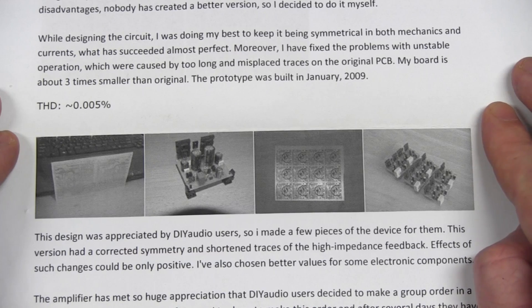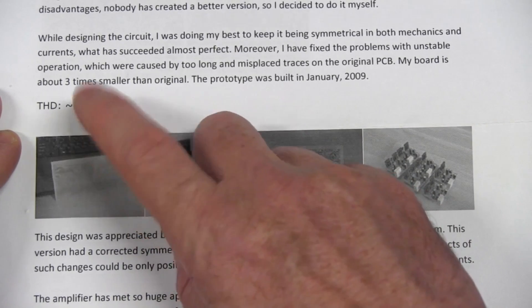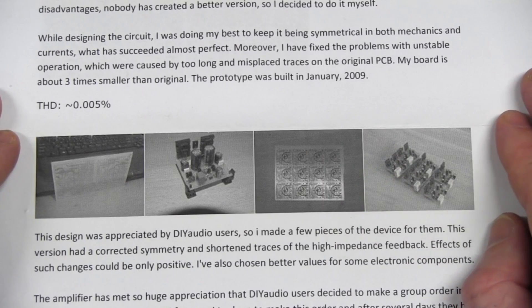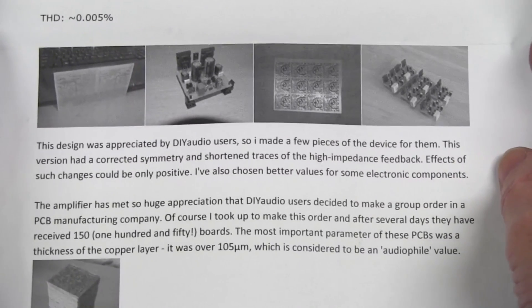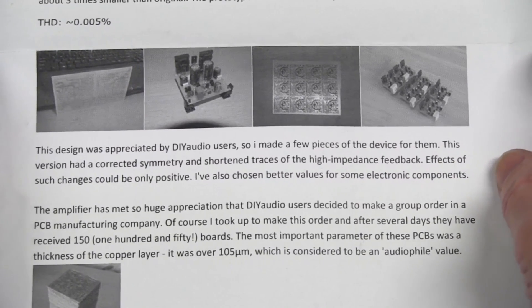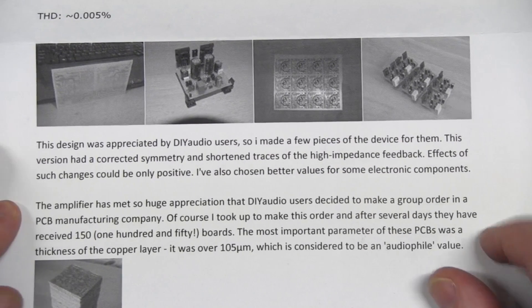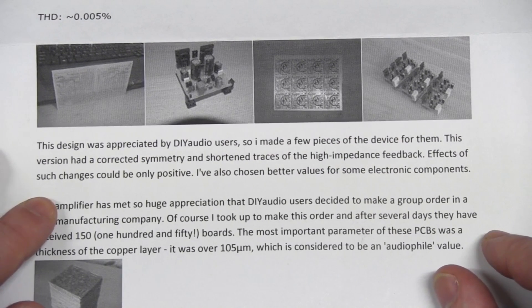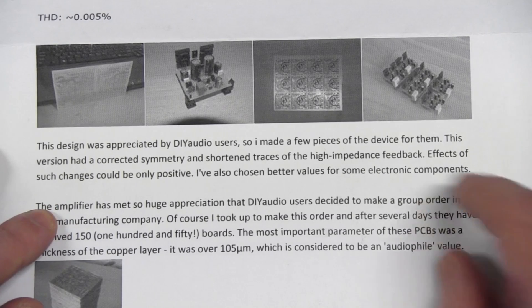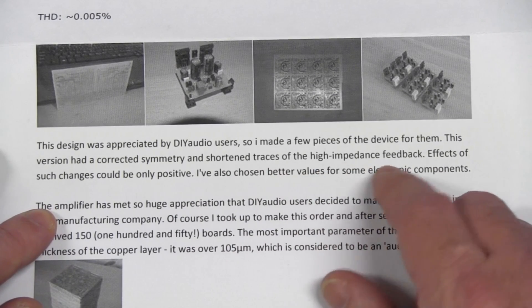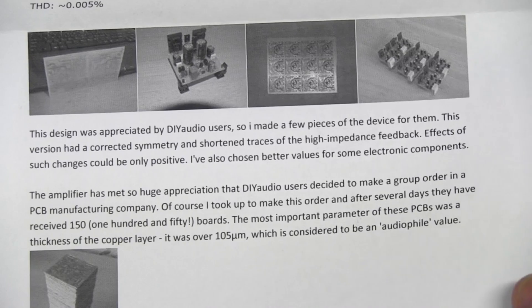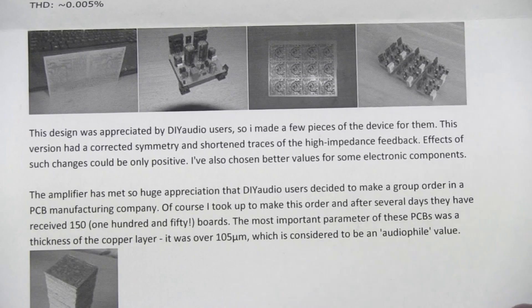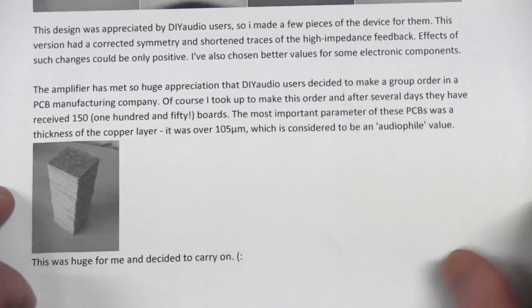The prototype was built in January 2009 and the THD is approximately .005. How did you measure that by the way? If you can let us know in the comments please Sebastian. If you've got like an audio precision or some sort of THD analyzer or something. Anyway, this design was appreciated by audio do-it-yourself audio users. So I made a few pieces of devices for them. Current symmetry and shortened traces, high impedance feedback. Nice run. The most important parameter was the thickness of the copper layer, over 105 microns, which is considered audio file value. All right. And there's the stack of boards. Brilliant.